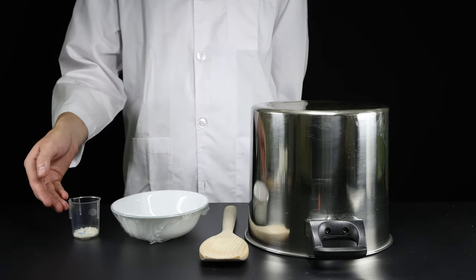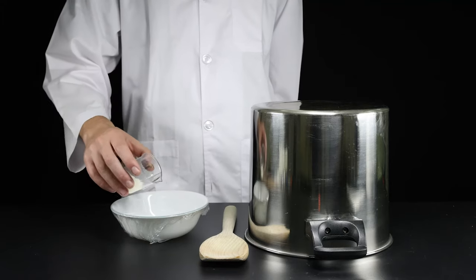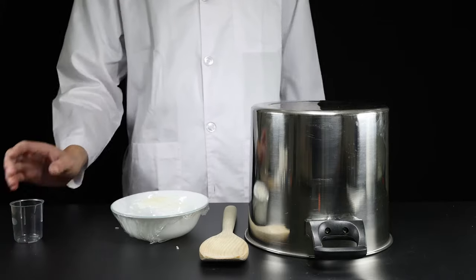Now sprinkle a few grains of uncooked rice on the plastic film. You can also use sand. Now bring the pot close to the bowl.